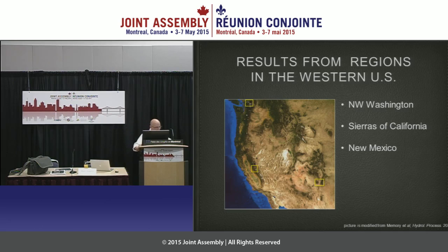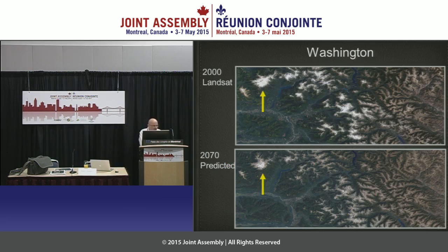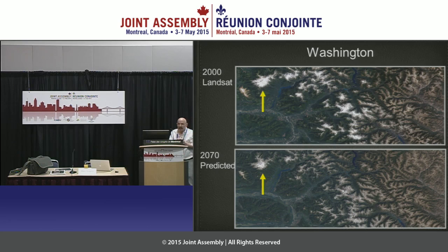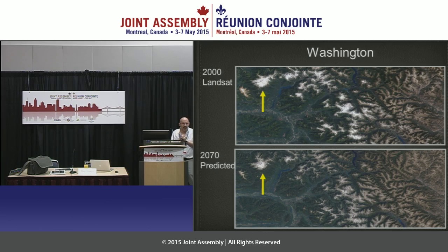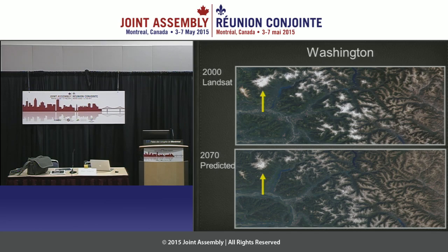Let's start with the Washington site. What you see in the top panel is essentially a visual image taken from the Landsat satellite for the year 2000, at a spatial resolution of 30 meters — presented here at about 150 meters. The key feature I chose this site for is a ring of perennial snow cover that starts at the top and comes in an arc down through the image.